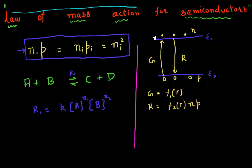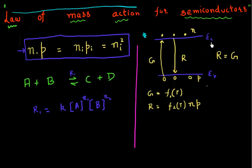If I have a semiconductor in steady state — where it's sitting on its own and not being disturbed — the number of electrons and holes in my system will remain constant. The only way that can happen is if my recombination rate equals my generation rate. If the generation rate is higher than the recombination rate, the number of carriers will increase; if the recombination rate is higher, you'll have a net decrease. But in steady state, the number of carriers is constant, which results in the recombination rate being equal to the generation rate.